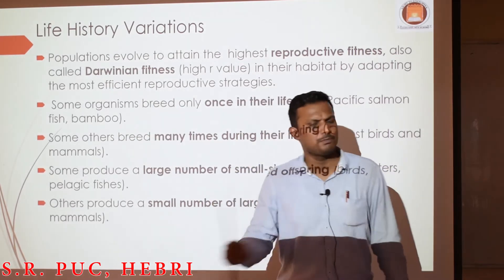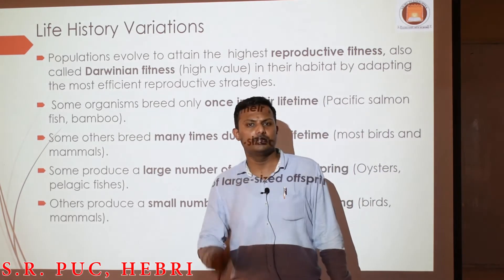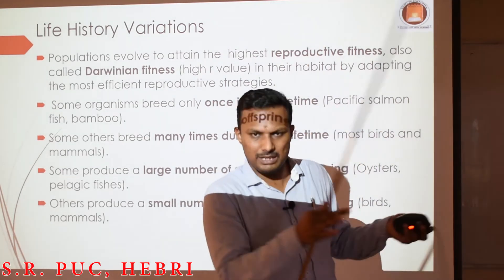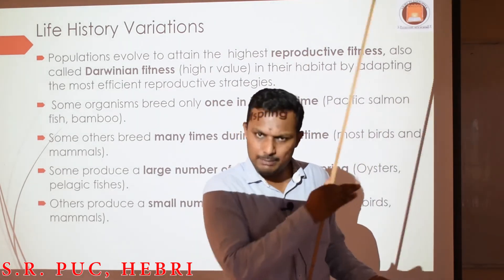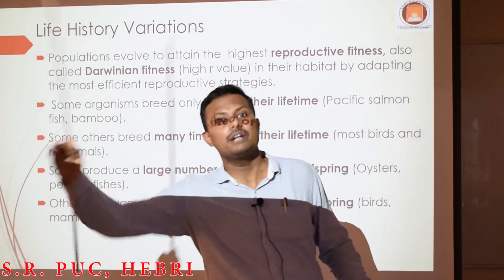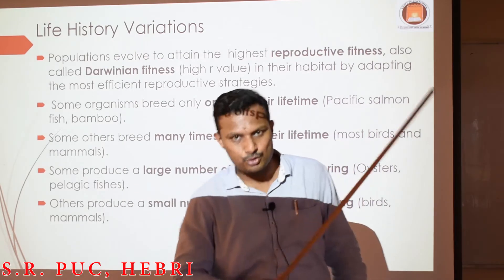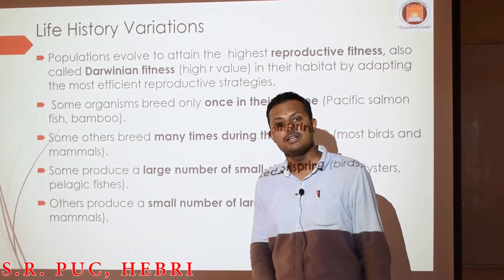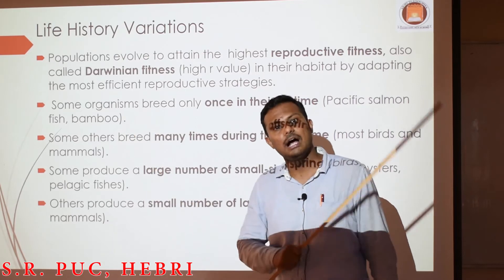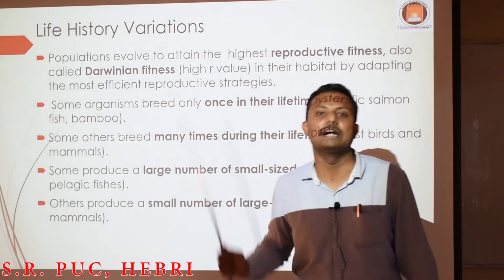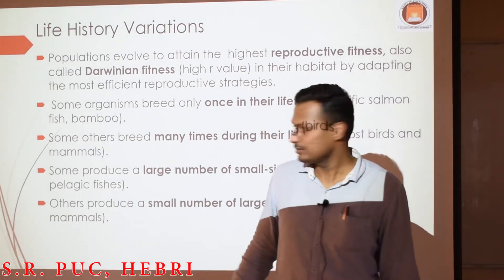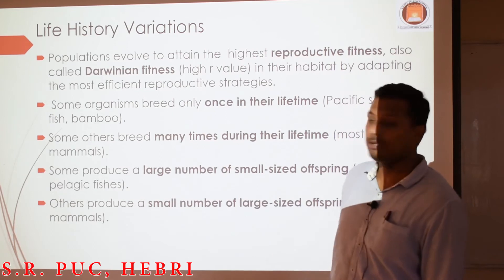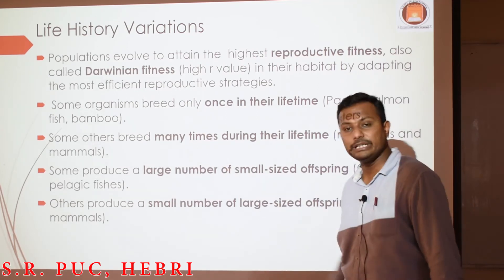Similarly, bamboo — different species of bamboo produce flowers ranging from maybe 50 to 100 years depending on the species. After that period they will produce the flowers, and once the breeding season is over, the plant will die.